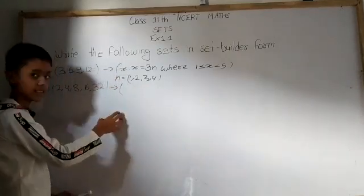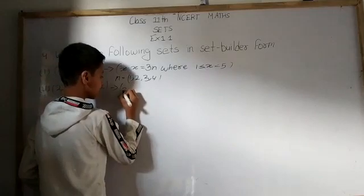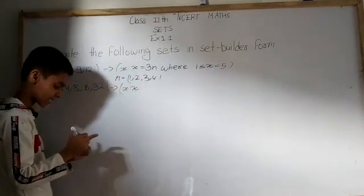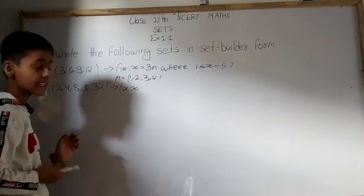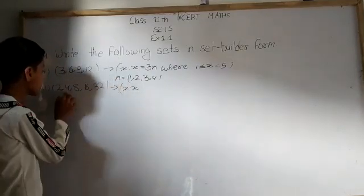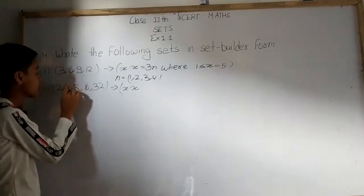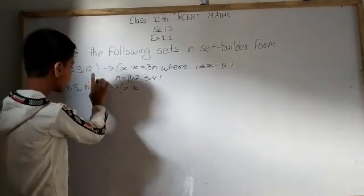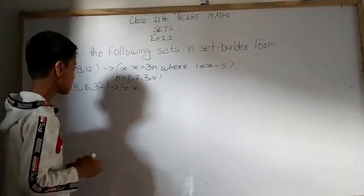Next is the second set: {2, 4, 8, 16, 32}. We follow the same process. We start with 'x : x' in the bracket. Now we find a pattern: 2¹ = 2, 2² = 4, 2³ = 8, 2⁴ = 16, and 2⁵ = 32.